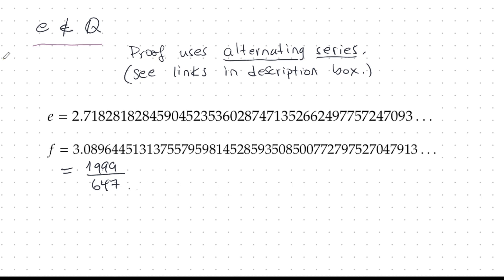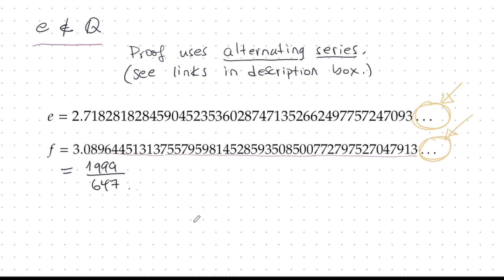The secret is in what I'm not telling you — these three dots on either side. It doesn't really matter what these digits are, even if they are repeating or all zero. The magic lies in what is happening in the hidden part. You can't just look at a non-terminating decimal and guess if it's rational or irrational. We have to use some kind of clever mathematical proof, and the alternating series proof is very clever.